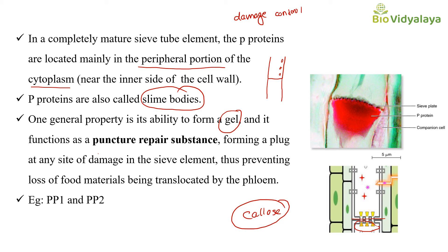Examples of P protein include PP1 (phloem protein 1) and PP2 (phloem protein 2). These are found in cucumber, watermelon, pumpkin, and similar plants.